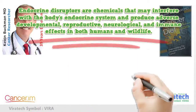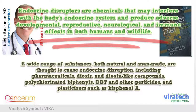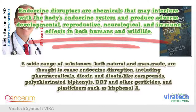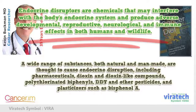Endocrine disruptors are chemicals that may interfere with the body's endocrine system and produce adverse developmental, reproductive, neurological, and immune effects in both humans and wildlife. A wide range of substances, both natural and man-made, are thought to cause endocrine disruption, including pharmaceuticals, dioxin and dioxin-like compounds, polychlorinated biphenyls, DDT and other pesticides, and plasticizers such as bisphenol A.